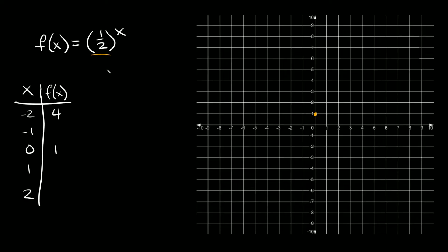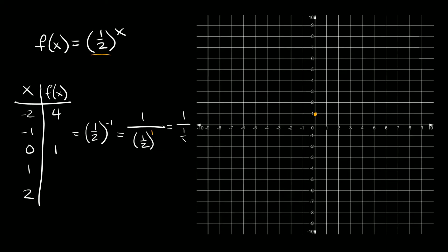Plugging in x = -1: f(x) = (1/2) raised to the -1, which equals 1 over (1/2) raised to the positive 1. Anything raised to the first power is just itself, so this is 1 divided by (1/2). Multiplying by the reciprocal gives us 1 times 2/1, which equals 2.